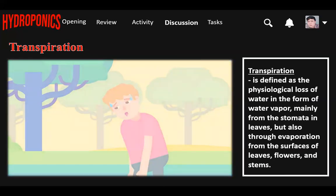Again, the meaning of transpiration: it is defined as the physiological loss of water in the form of water vapor, mainly from the stomata in leaves, but also through evaporation from the surfaces of leaves, flowers, and stems.